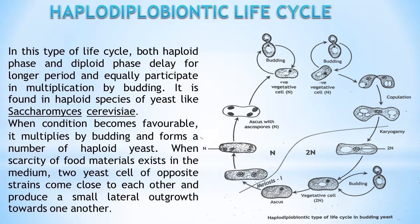Haplodiplobiontic life cycle: In this type of life cycle, both haploid phase and diploid phase delay for a longer period and equally participate in multiplication by budding. It is found in haploid species of yeast like Saccharomyces cerevisiae.